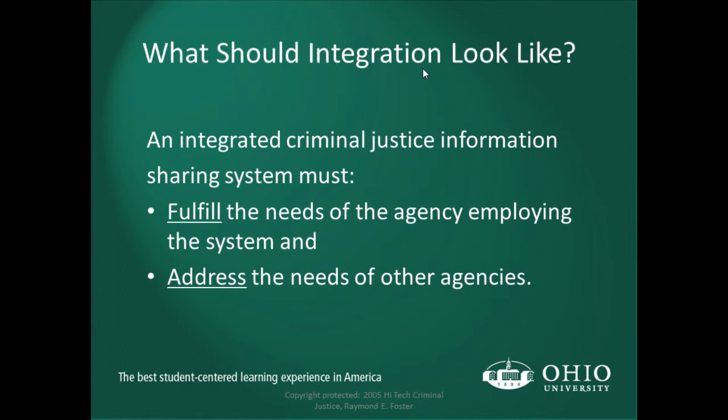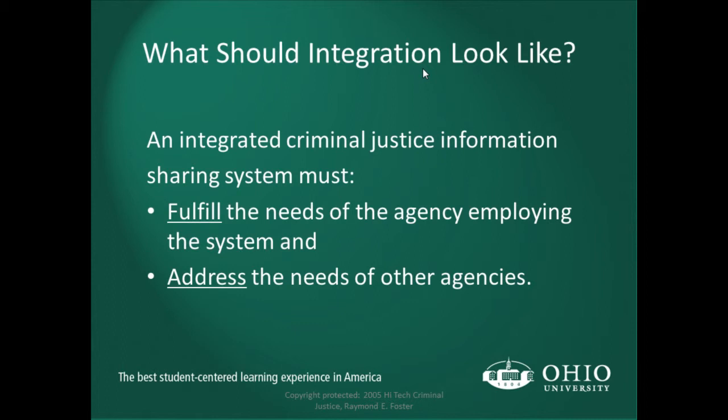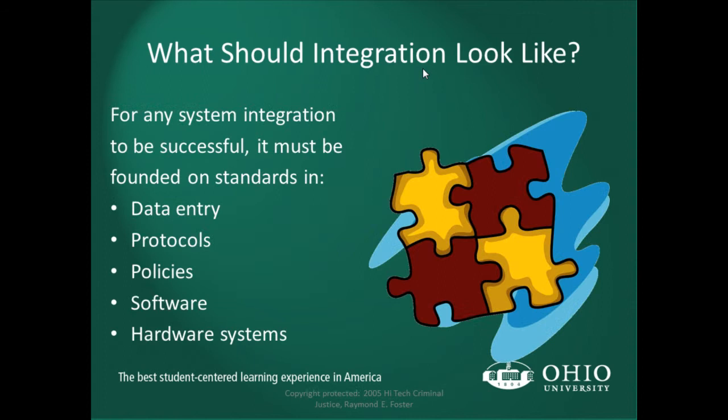What should integration look like? An integrated criminal justice information sharing system must fulfill the needs of the agency employing the system — if it doesn't work for us, what is the point? And it must address the needs of other agencies. It must be a system that works for everyone; if it doesn't, people won't buy in and there won't be cooperation.